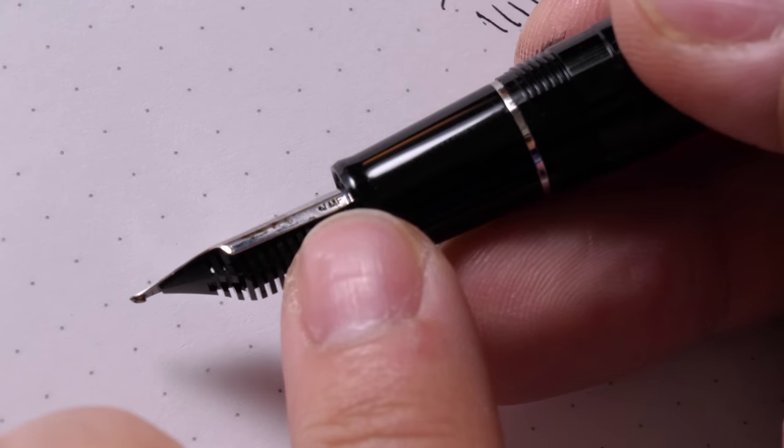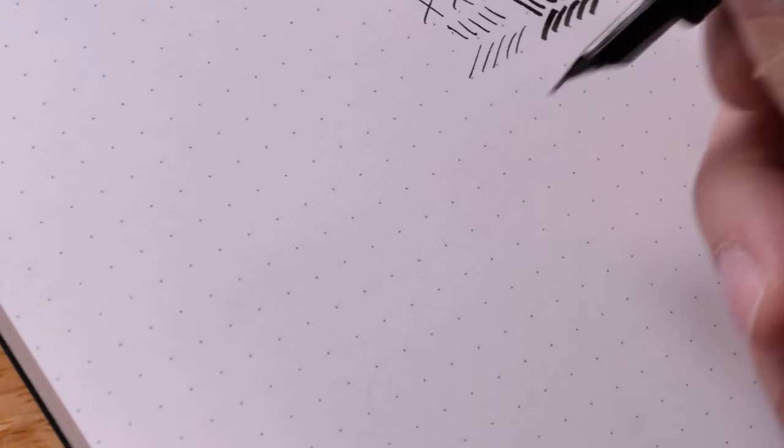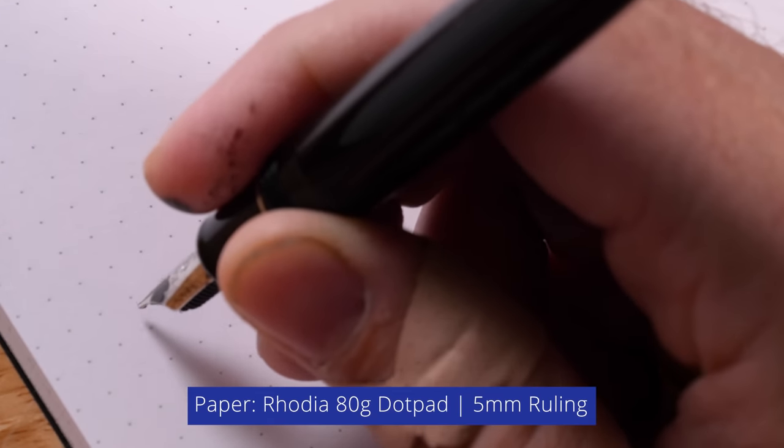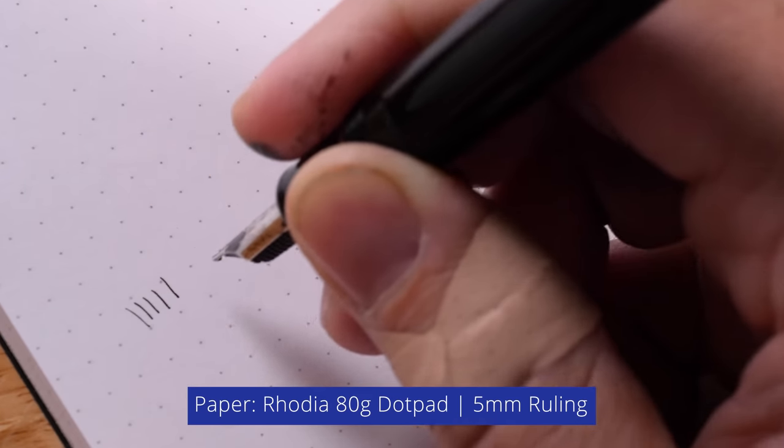And you can tell because it says N and then MF on the side. There you go. N, MF. That means Naginata Medium Fine. So if I'm writing with it fairly straight up, just like this, you can see I can get some very thin down strokes.